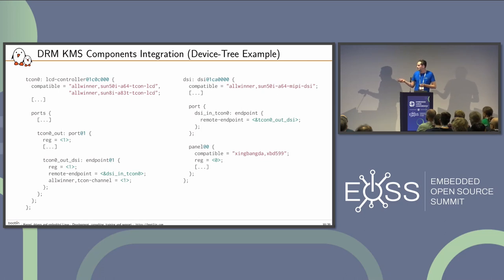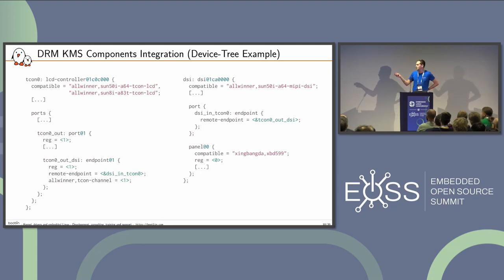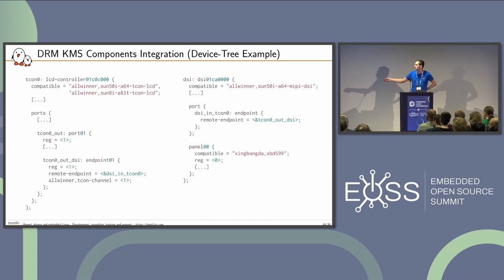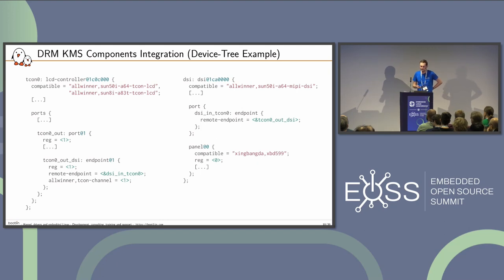The device tree graph uses port and endpoint nodes with remote-endpoint properties pointing to another device's endpoint — creating a bi-directional link that defines the topology between components. For MIPI DSI, since the DSI controller creates a bus, panel devices can simply be child nodes of the DSI controller rather than requiring explicit port and endpoint representation.